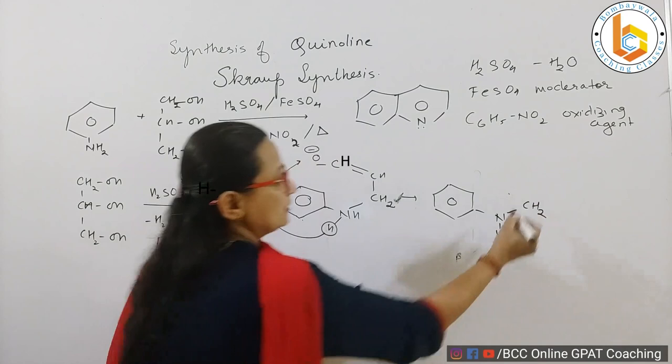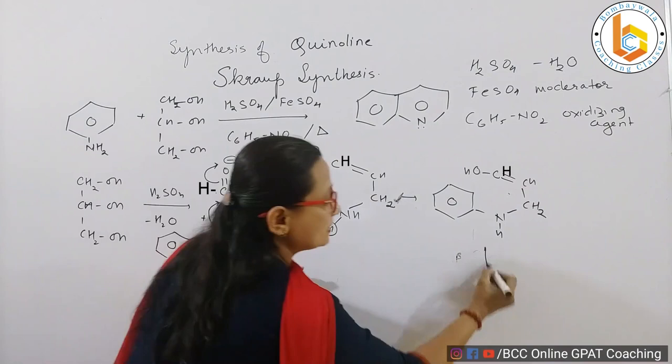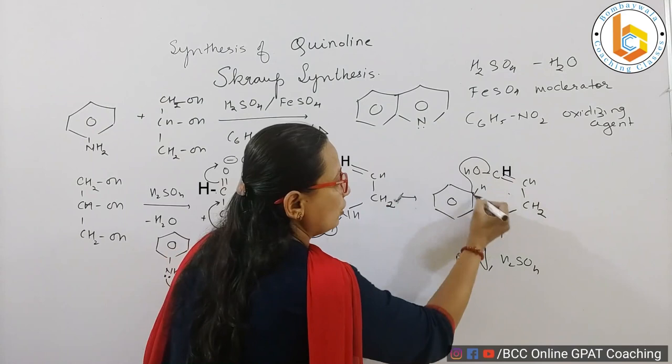I am saying it is 1,4 - suppose this is 1, this is 4. Actually this is 1 and this is 4. So what is happening here is this hydrogen is coming and attacking on this oxygen. So what do I get in this case? I will get a benzene ring, I will get NH, I will get a CH2-CH double bond CHOH because this hydrogen has migrated on this negatively charged oxygen.